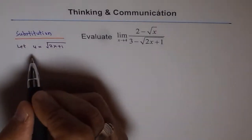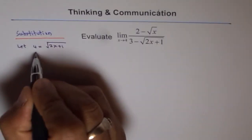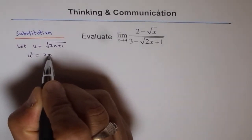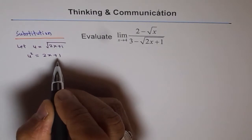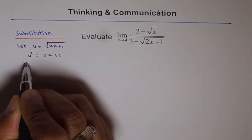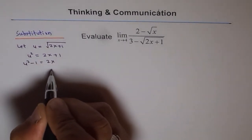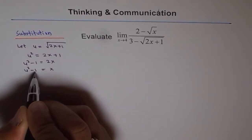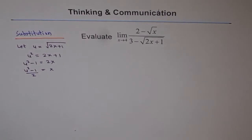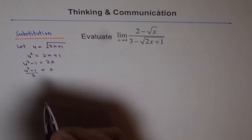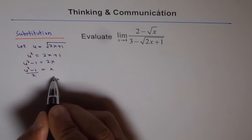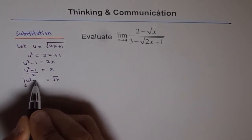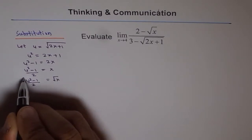We should square it first. Squaring gives us u squared equals 2x plus 1. So u squared minus 1 equals 2x, meaning x equals (u squared minus 1) over 2. Therefore, square root of x equals the square root of (u squared minus 1) over 2.